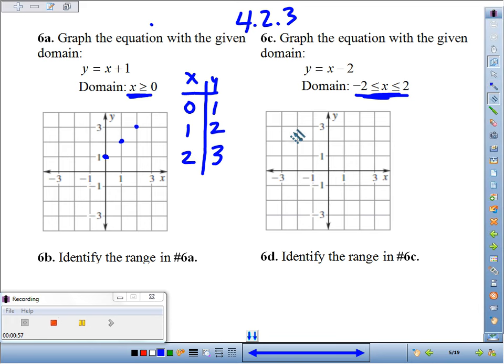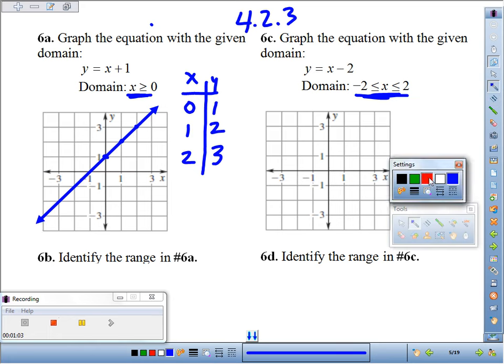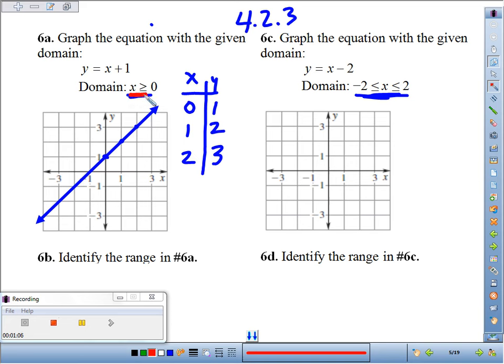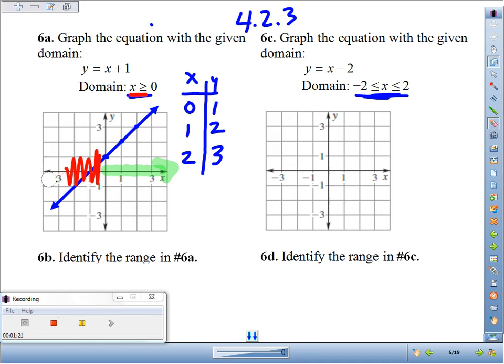At this point, I think the most common mistake I saw was people went and just took the liberty of connecting the dots like that. You can't do that because, again, they said our domain, we can only pick x values greater than or equal to 0. Well, the x's are greater than or equal to 0 from here and in this direction. So that means I can't have anything on this side.